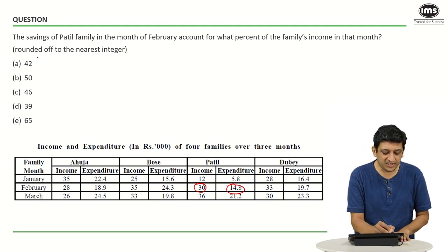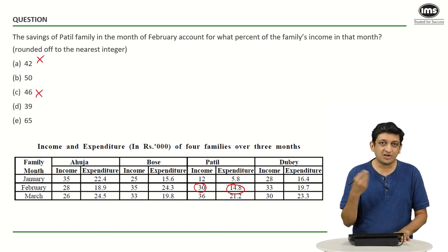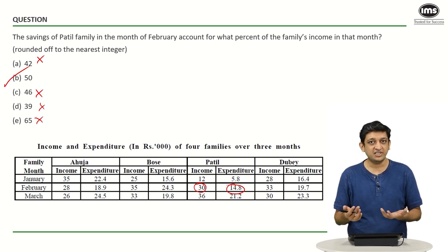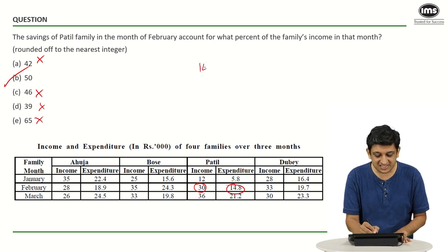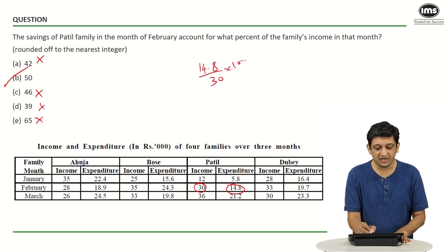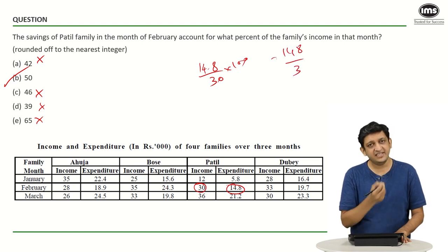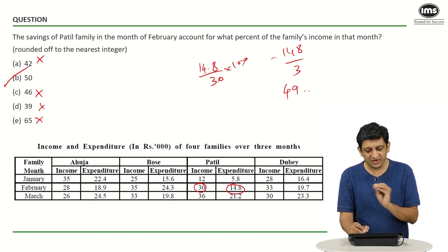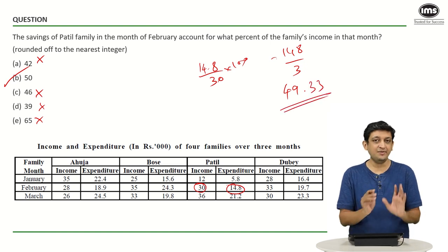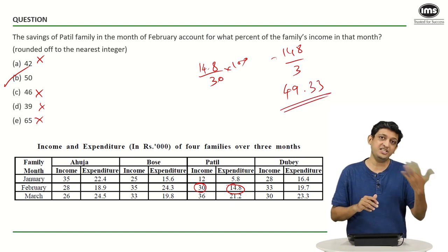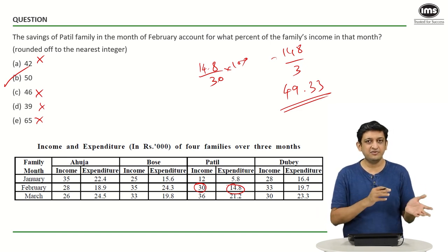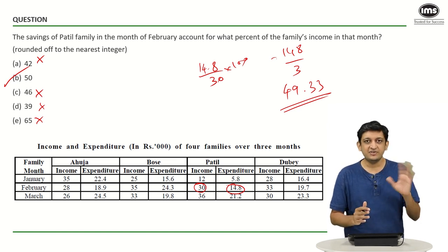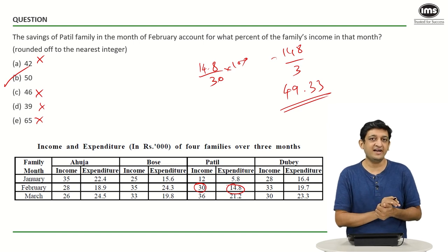Looking at the options, 42, 46, 39, and 65 definitely cannot be the answer — 50 is the closest. So I need not even calculate precisely. If you do calculate: 14.8 divided by 30 into 100 gives 49.33 percent as expenditure. So the savings percentage is 50.67 percent. Since we are looking at nearest integers and only 50 appears in the options, the answer is 50.